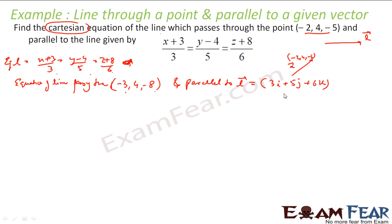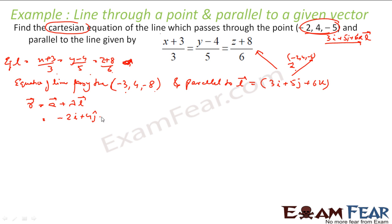This means that my l vector is 3i + 5j + 6k. This whole equation denotes a line parallel to this l vector passing through that point. I am interested only in l vector, and I got this l vector from the equation. Now I have a vector and I have l vector, so my equation of the line is r = a vector + λ·l vector. A vector is minus 2i + 4j − 5k, and l vector is 3i + 5j + 6k. So this is my equation of the line.